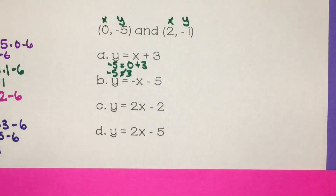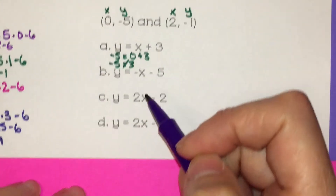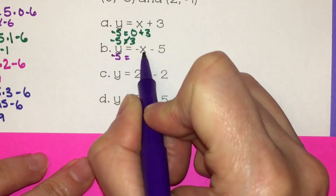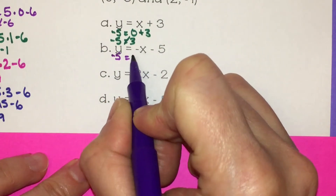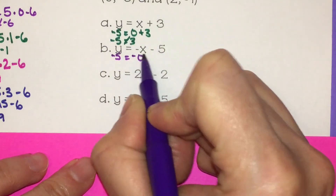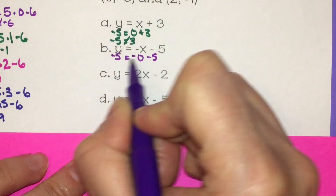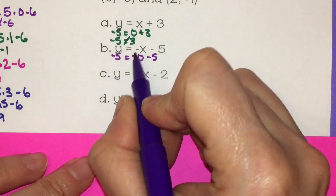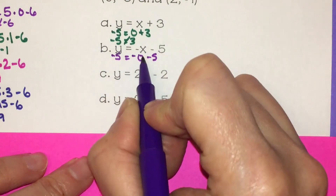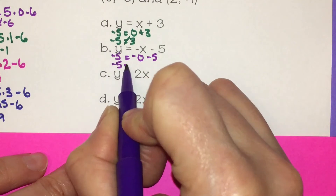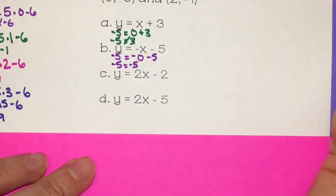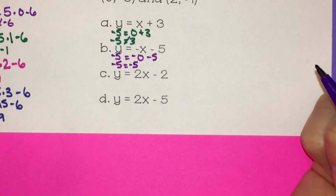If one point doesn't work, the other point's not going to either. So letter B: I'm going to plug in negative 5 equals negative x value is 0, minus 5. Negative 0 is just 0 — there's no negative 0, but I had to bring that negative down and then plug in my x value. So we have negative 5 equals 0 minus 5 is negative 5. The two sides are equal, so that one did work.